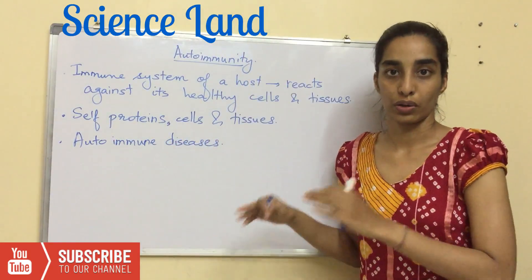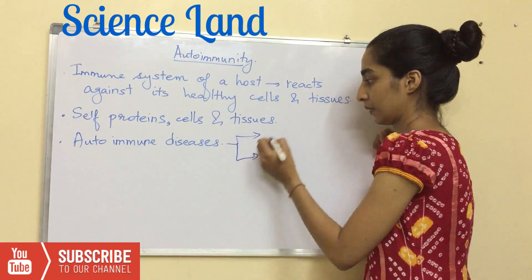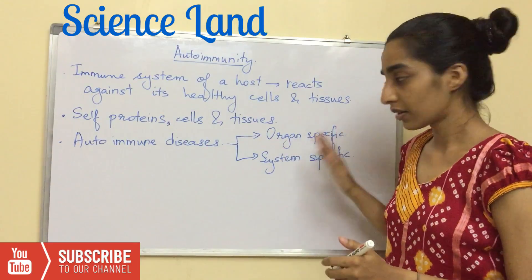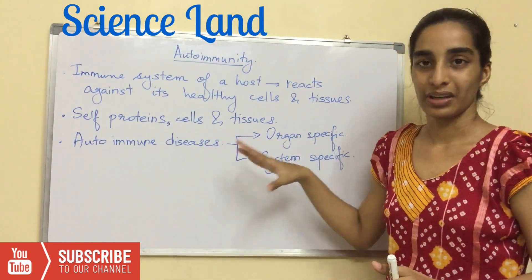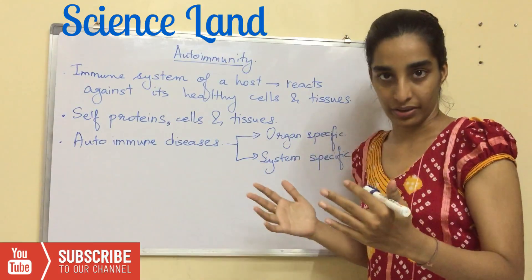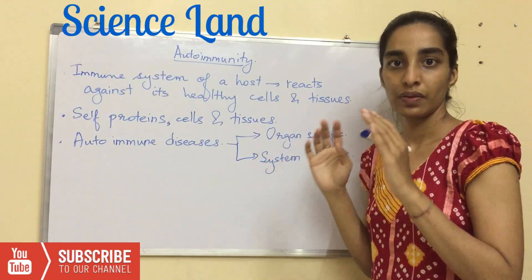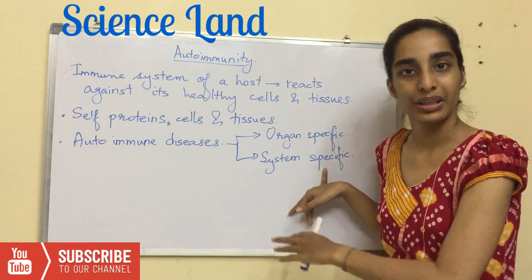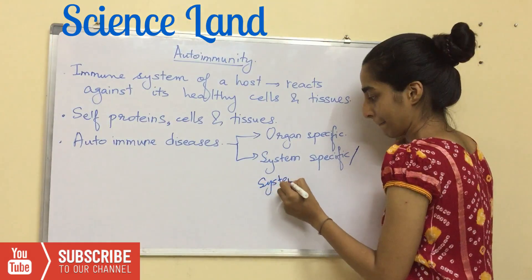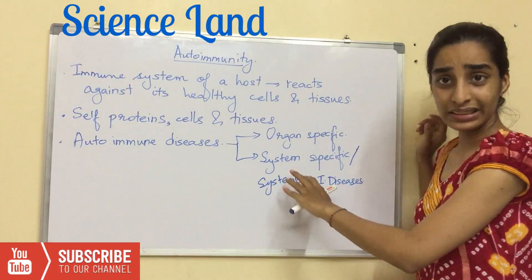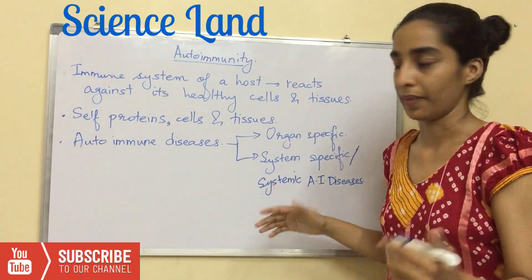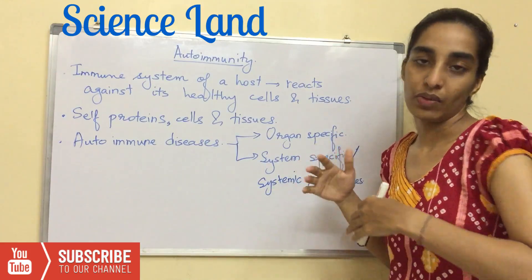There are two types of autoimmune diseases: organ-specific and system-specific. Organ-specific autoimmune disease usually targets a particular organ or gland, so you have a narrow range of target. System-specific autoimmune diseases are also known as systemic autoimmune diseases. These attack a system and thus have a broad range of target area. Each type has a lot of examples.